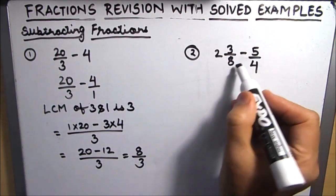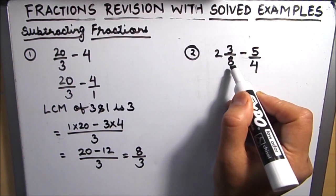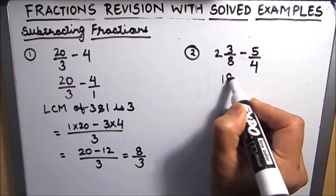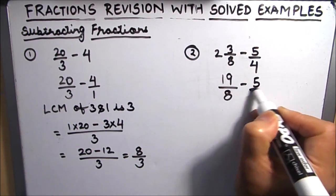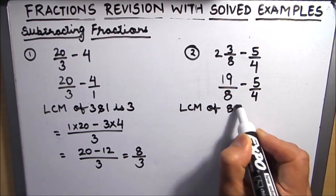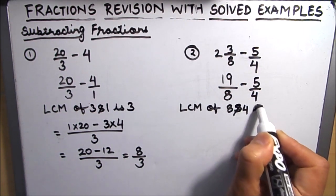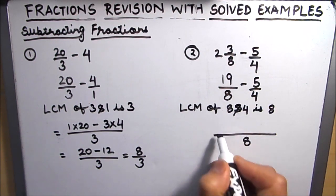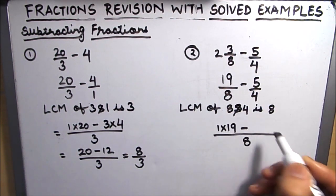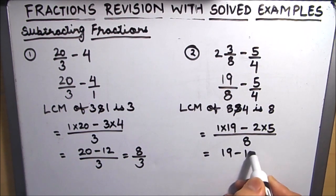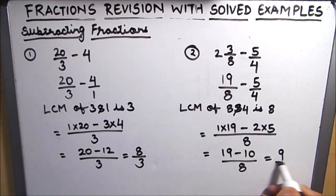The next subtraction example has a mixed fraction, so the first step is to convert it into an improper fraction. 8 times 2 plus 3 gives 19 over 8, and we subtract 5 over 4. Next we find the LCM of 8 and 4, which is 8. The common denominator is 8. We compute 1 times 19 minus 2 times 5, giving 19 minus 10 over 8, which equals 9 over 8. This is how we do subtraction of fractions.